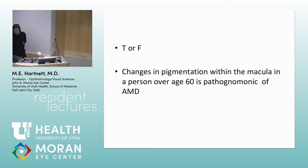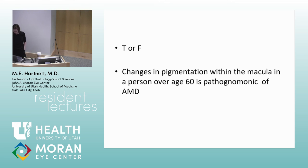Changes in pigmentation within the macula in a person over age 60 is NOT pathognomonic of AMD — conditions like CSCR can also cause pigmentation changes. Risk factors associated with AMD include CFH polymorphism, smoking, and the genetic variant on chromosome 10 (HTRA ARMS2). Low body mass is not a risk factor. Characteristic of a RAP lesion: it is associated with a PED, and on fluorescein angiography the lesion appears in the center of the PED — not at the edge, which would suggest CNV.